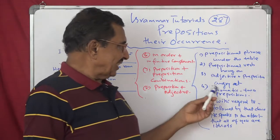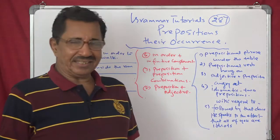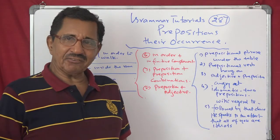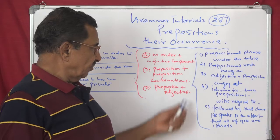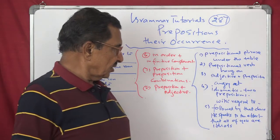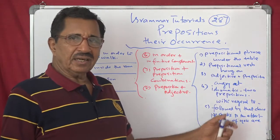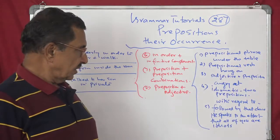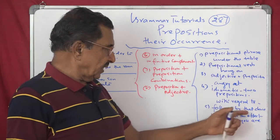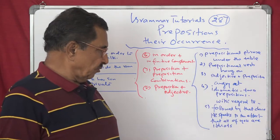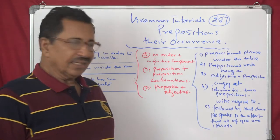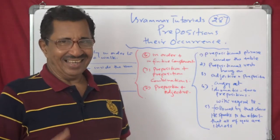Then three, adjective plus prepositions: angry at, angry about, angry with someone. Four, idiomatic use of two prepositions: with regard to, two prepositions. Then fifth one is followed by that clause. It speaks to the effect that all of you are idiots. Example.